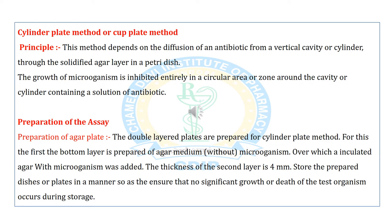For preparation of the agar plate, double layer plates are prepared for the cylindrical plate method. First, the bottom layer is prepared of agar medium without microorganisms, over which an inoculated agar with microorganisms is added. The thickness of the second layer is 4 mm. Store the prepared dishes or plates in a manner that ensures no significant growth or death of the test organism occurs during storage.